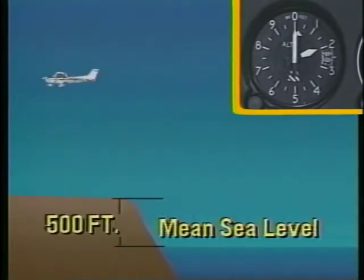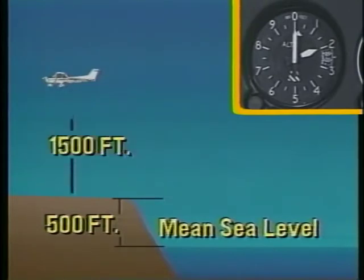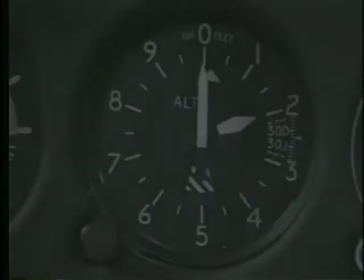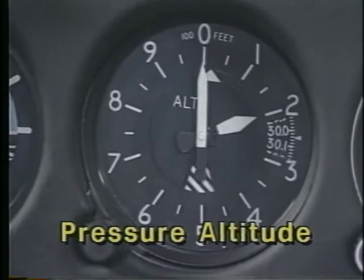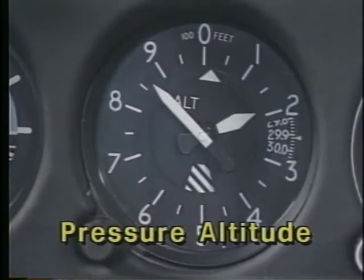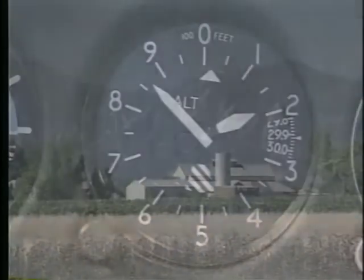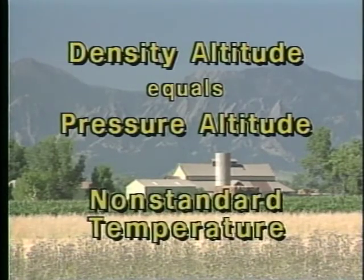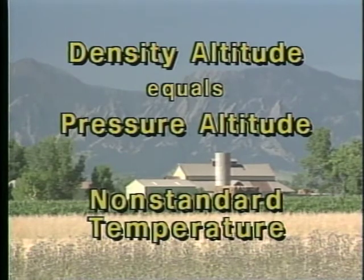If you're flying over a surface higher than mean sea level, you must subtract its height from the altimeter reading to obtain your distance above the surface. This difference is called absolute altitude and is often referred to as height above ground level, or AGL. Pressure altitude is referenced to a standard level of 29.92 inches of mercury. It is used with the existing temperature to determine density altitude. Density altitude is pressure altitude corrected for non-standard temperature. It is not really an altitude, but is a theoretical value used in the computation of aircraft performance.